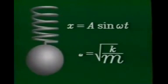For the mass on a spring, the angular frequency is equal to the square root of k over m. The stiffer the spring, the higher the frequency. The greater the mass, the lower the frequency.